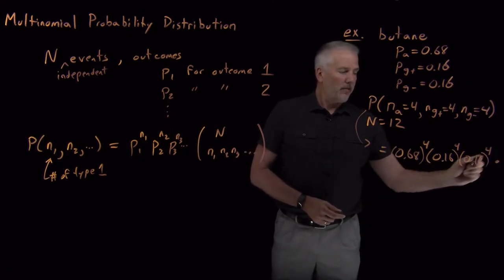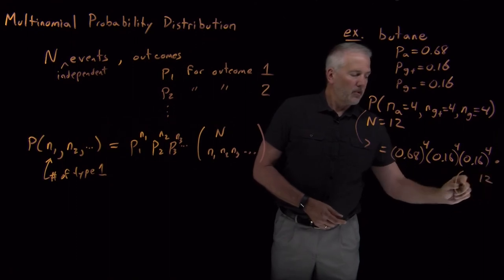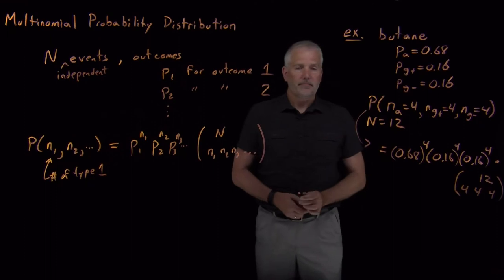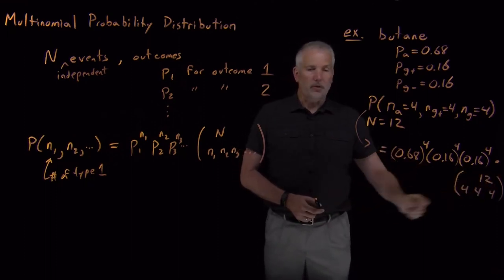And we need to multiply all of that by the binomial or the multinomial coefficient. 12 choose 4, 4, 4 on the bottom. So that would be a 12 factorial divided by 4 factorial, 4 factorial, 4 factorial.